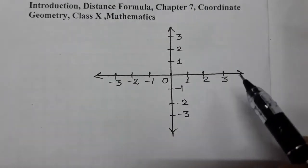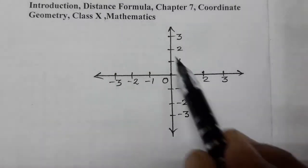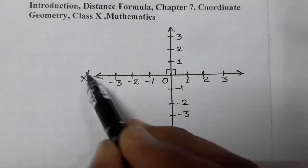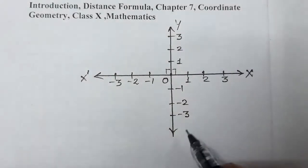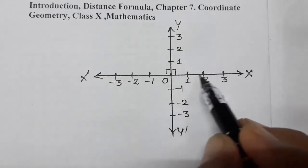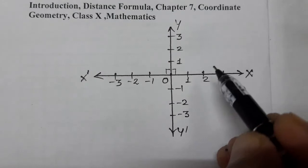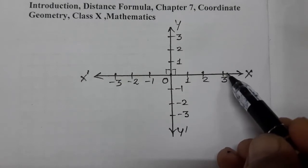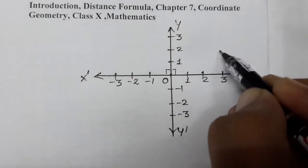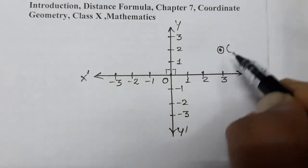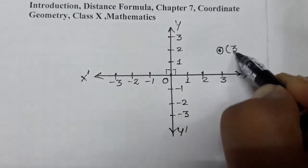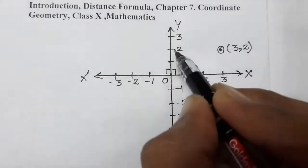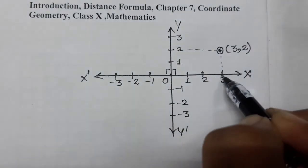Do you know about the Cartesian coordinate system? From class 8 we have been studying it. It is a system where two mutually perpendicular lines intersect each other at 90 degrees. This is the X-axis (X dash O X), this is the Y-axis (Y O Y dash). For example, point (3, 2) — on the X-axis it covers a distance of 3, and on the Y-axis a distance of 2.